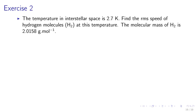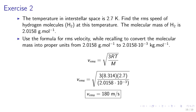Exercise 2. The temperature in interstellar space is 2.7 Kelvin. Find the RMS speed of hydrogen molecules H2 at this temperature, given that the molecular mass of H2 is 2.0158 grams per mol. We may use the formula for RMS velocity while recalling to convert the molecular mass into the proper units from grams per mol into kilograms per mol units. Using v RMS equals square root of 3RT over M, you may calculate v RMS equals 180 meters per second. Thank you.